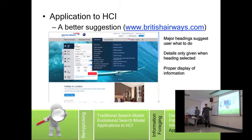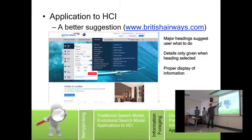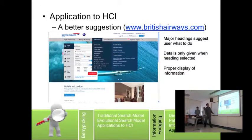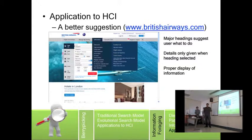We picked the British Airways website as an example of a good website. First of all, they have major headings that tell the user what they're supposed to do — they've done their research beforehand. That's why, as always in HCI, evaluation is very important. Details are only given when a heading is selected, and there's proper display of information. You only see the information if you need to see it — no unnecessary content.